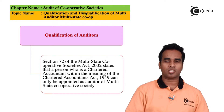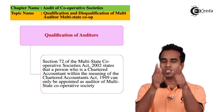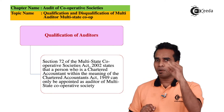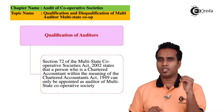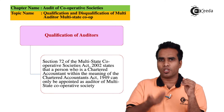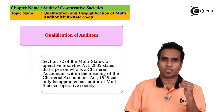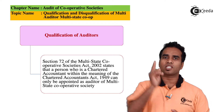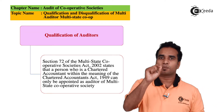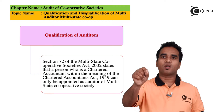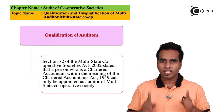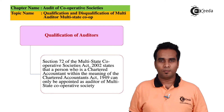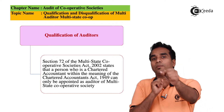Let's talk about qualifications — you can see on the screen. Who can become an auditor in a Multi-State Cooperative Society? The simple condition is that the person must be a Chartered Accountant as per the CA Act 1949. Only a CA can be appointed as auditor.